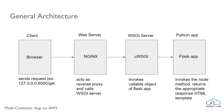The WSGI server is invoked by the web server for any dynamic content. The WSGI server invokes a callable object of the Python app. The Python app invokes the route method and returns the appropriate response HTML template. We will need to configure how the web server needs to respond to a client request, how to forward the request, etc.